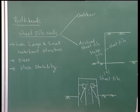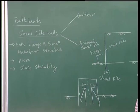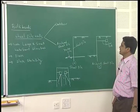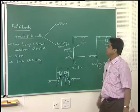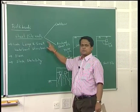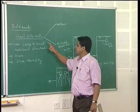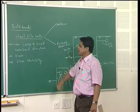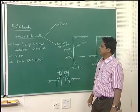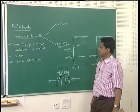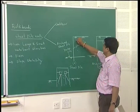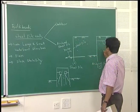Sheet piles are basically classified into two components: cantilever sheet pile and anchored sheet pile. They are used for large and small waterfront structures — that means harbor, dock, and harbor structures. They are also used for protection of piers and slope stability. These three examples are shown in the figure.